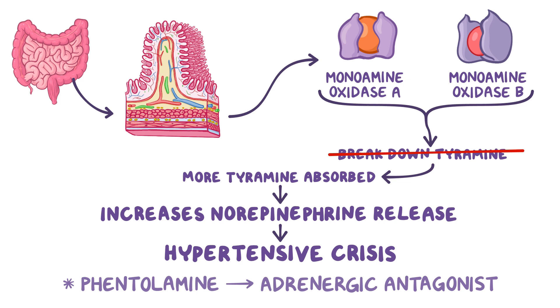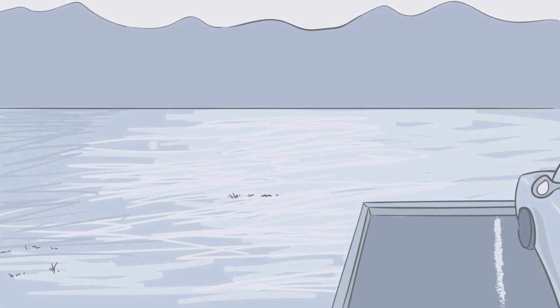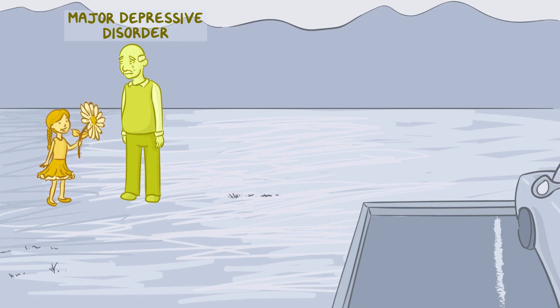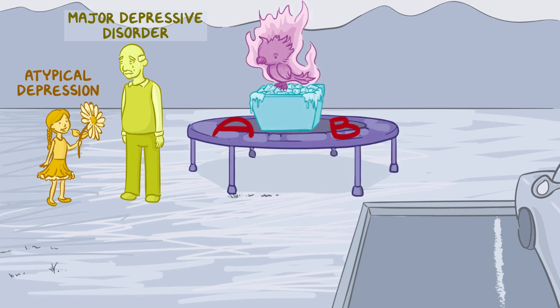Now, we want to make a simple and fun mnemonic that'll help you efficiently memorize and retain all these pharm facts. So let's have a sad old man representing major depressive disorder, but he's being cheered up by a little girl with a flower, representing its effectiveness for treating atypical depression. Now these are treated by the non-selective MAOIs, so let's use a fiery phoenix for phenelzine, who's sitting in a box full of ice for isocarboxazid. The box is on top of a trampoline for tranylcypromine. The trampoline has the large letters A and B on it to help you remember these medications inhibit both MAO-A and MAO-B.